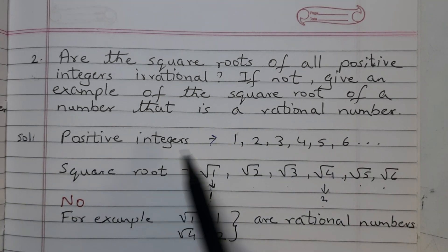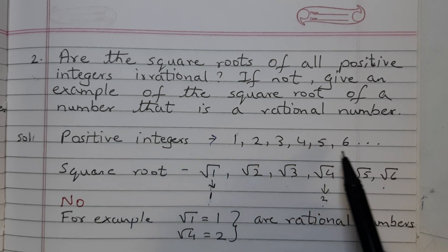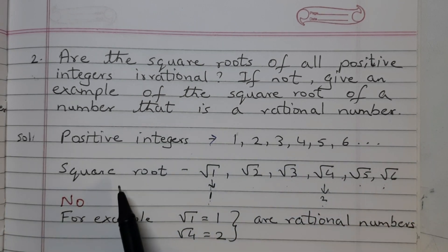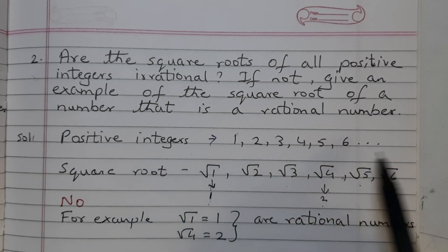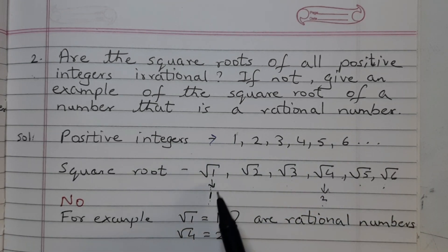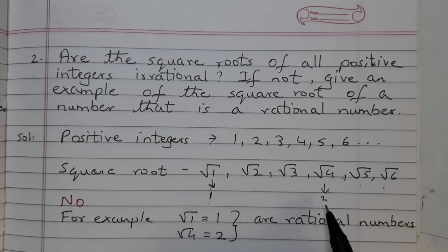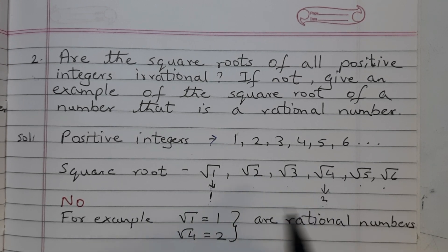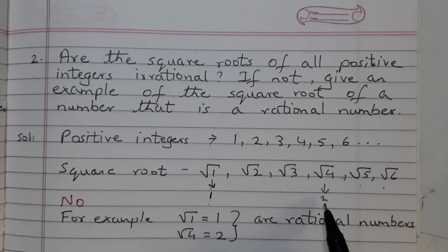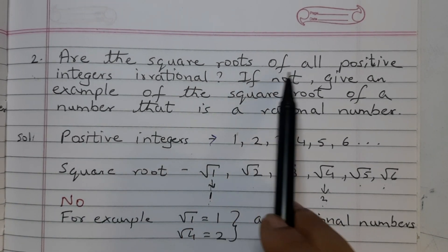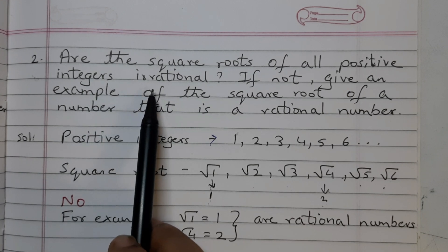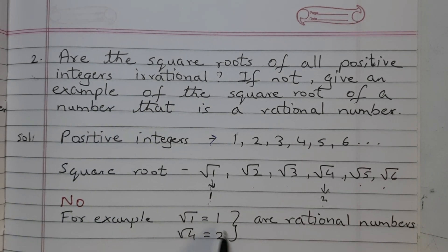Positive integers are starting from 1, so it's 1, 2, 3, 4, 5, 6 and so on. If you take the square root of this, that's square root of 1, 2, 3, 4, 5, 6. Now root 1 is 1, root 4 is equal to 2. So we see that root 1, that is 1, is a rational number. Root 4, which is 2, is also a rational number. Therefore, the answer is no. The square roots of all positive integers are not irrational.